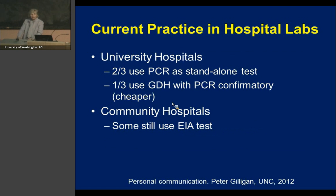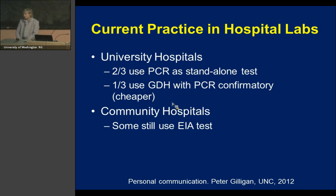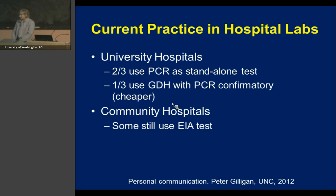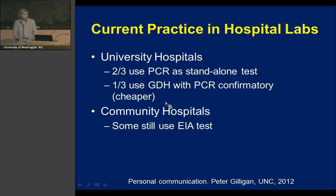Peter Gilligan at the University of North Carolina did an informal survey of university hospital labs and found that about two-thirds use PCR as a standalone test, and about one-third use GDH screening with PCR confirmatory because it is cheaper. However, remember that some community hospitals are still using EIA tests, so be aware of the limitations of that test if you practice in that environment.